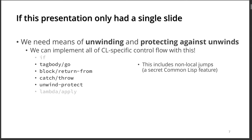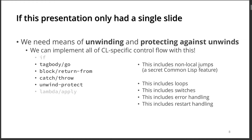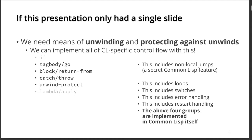Tag body/go and block/return-from also include one secret ingredient of Common Lisp called non-local jumps. It is not really widespread in other programming languages, but still pretty important in Common Lisp. All in all, these primitives allow us to implement loops, switches, error handling, and interactive restart handling — all kinds of control flow available in Common Lisp. And these four groups are actually implemented in Common Lisp itself, based on these primitives listed on the left side.